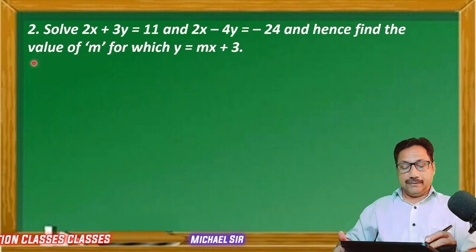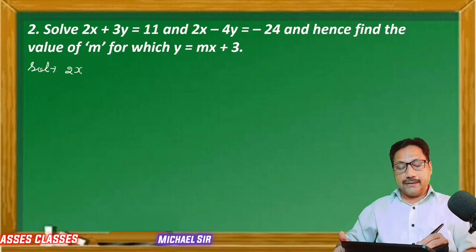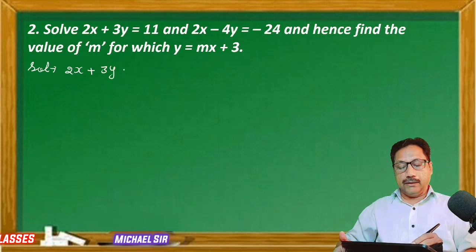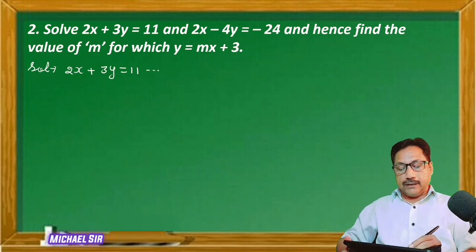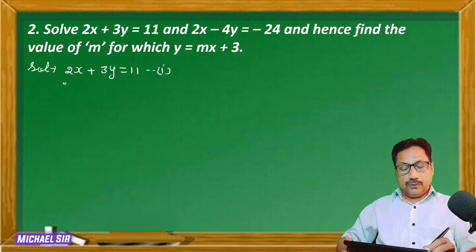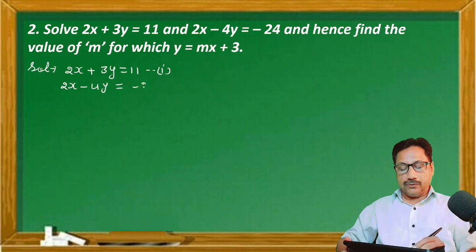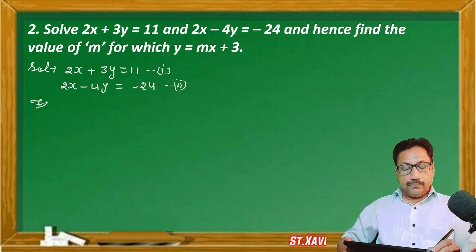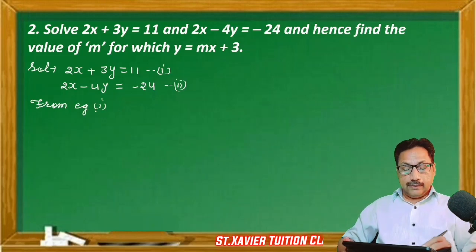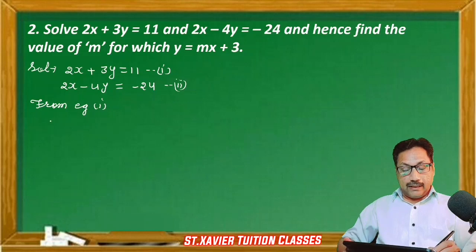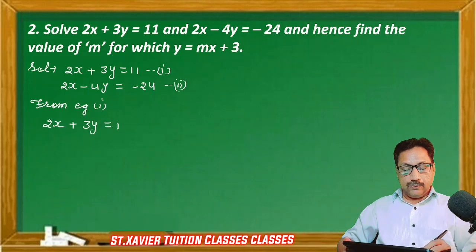Let's begin. We have two equations: 2x + 3y = 11 as the first equation, and 2x - 4y = -24 as the second equation. From equation first, let's write the first equation: 2x + 3y = 11.